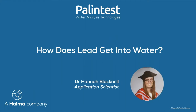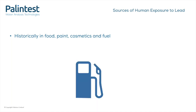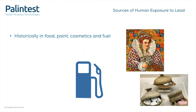So on to our first section: how does lead get into water? Traditionally, before the dangers of lead poisoning were known, lead was used in everything — food, makeup, paint, and fuel up until the latter part of the 20th century. Here in Europe, lead was the main component used in 18th century cosmetics to achieve that pale ashen look that was so sought after — quite the opposite of today's fake tanning culture.